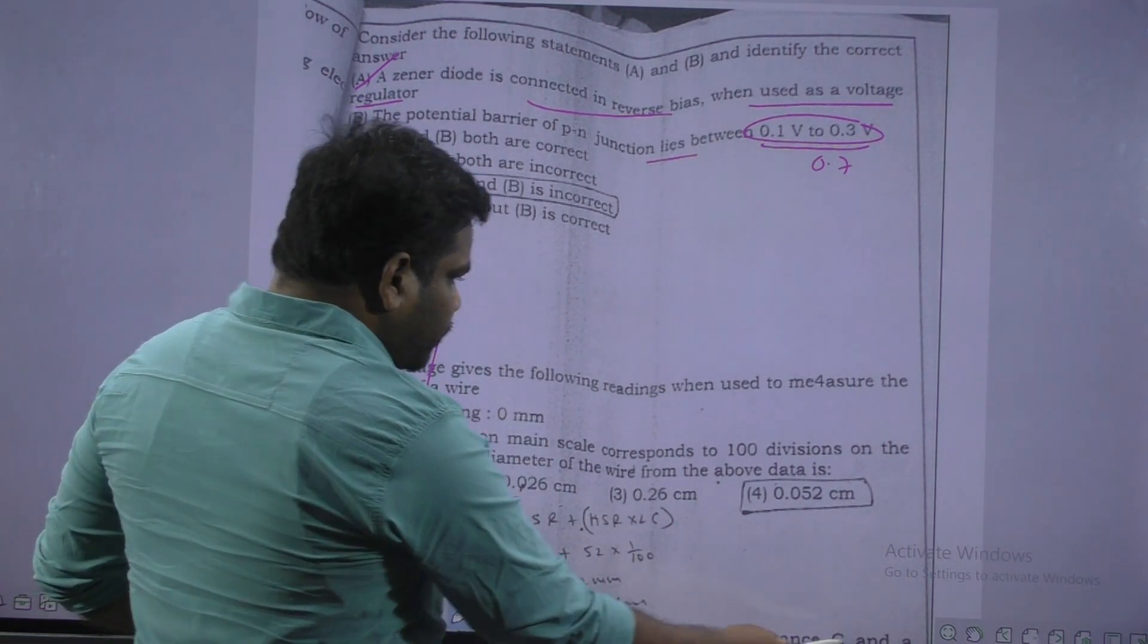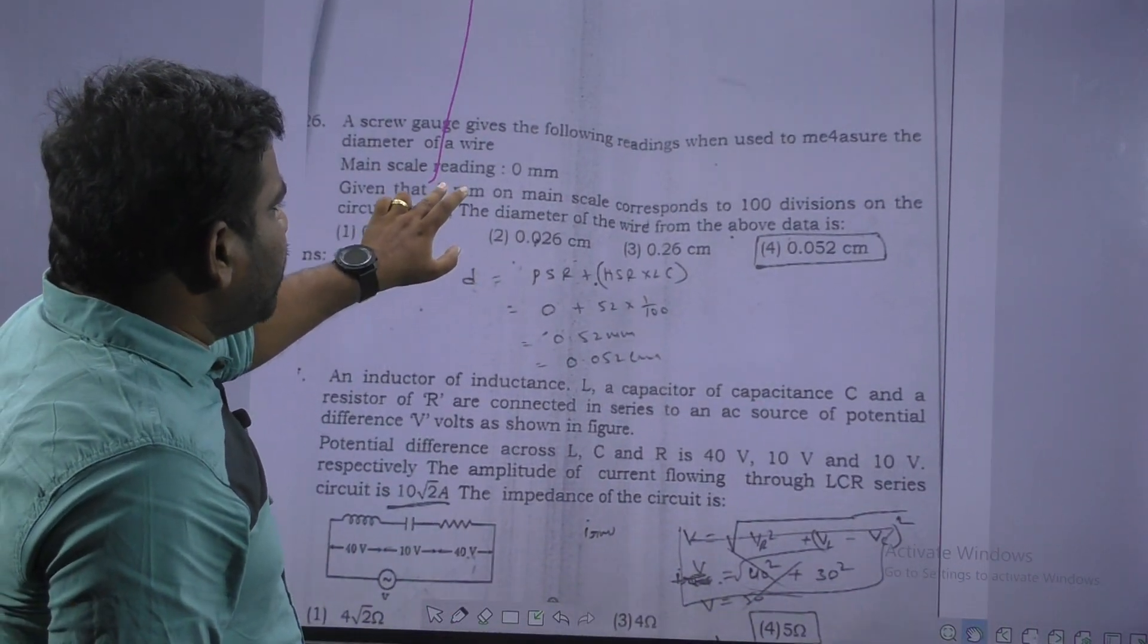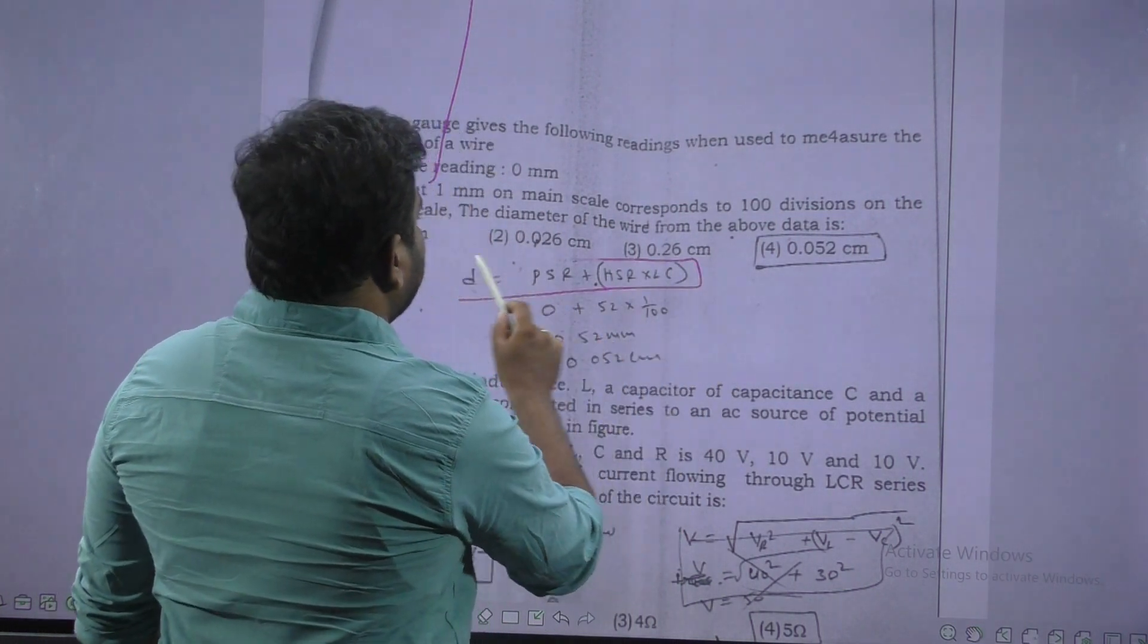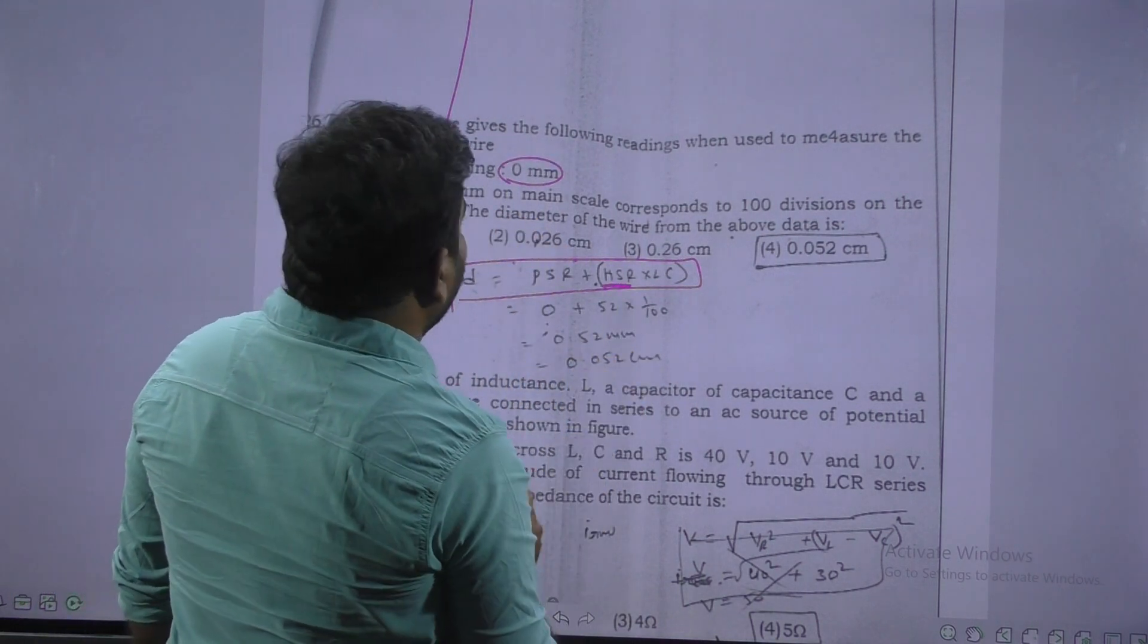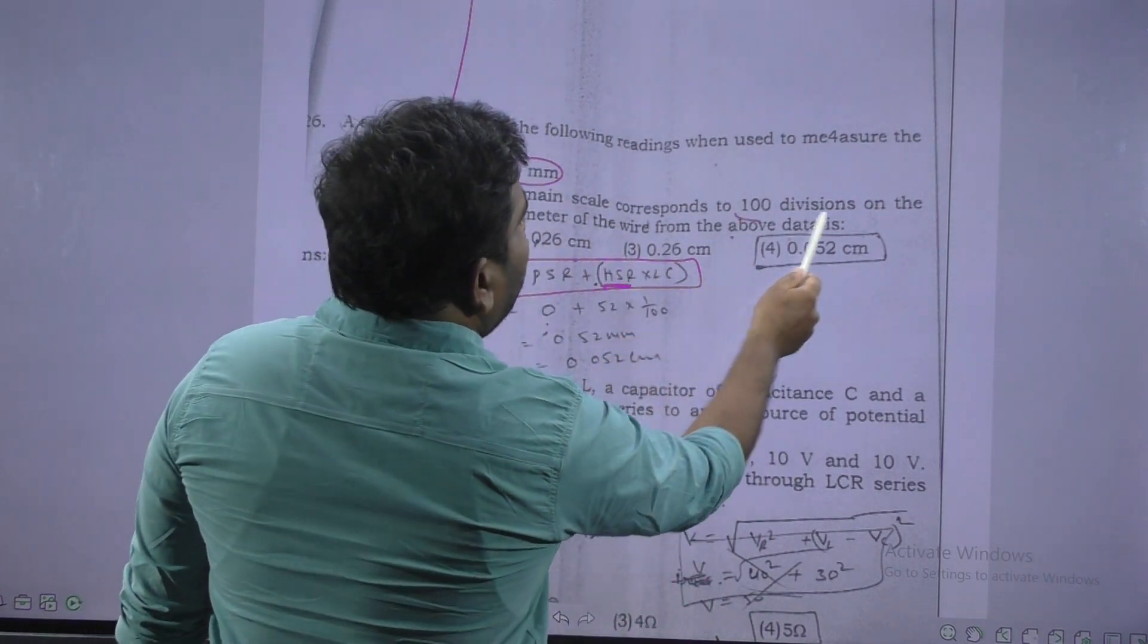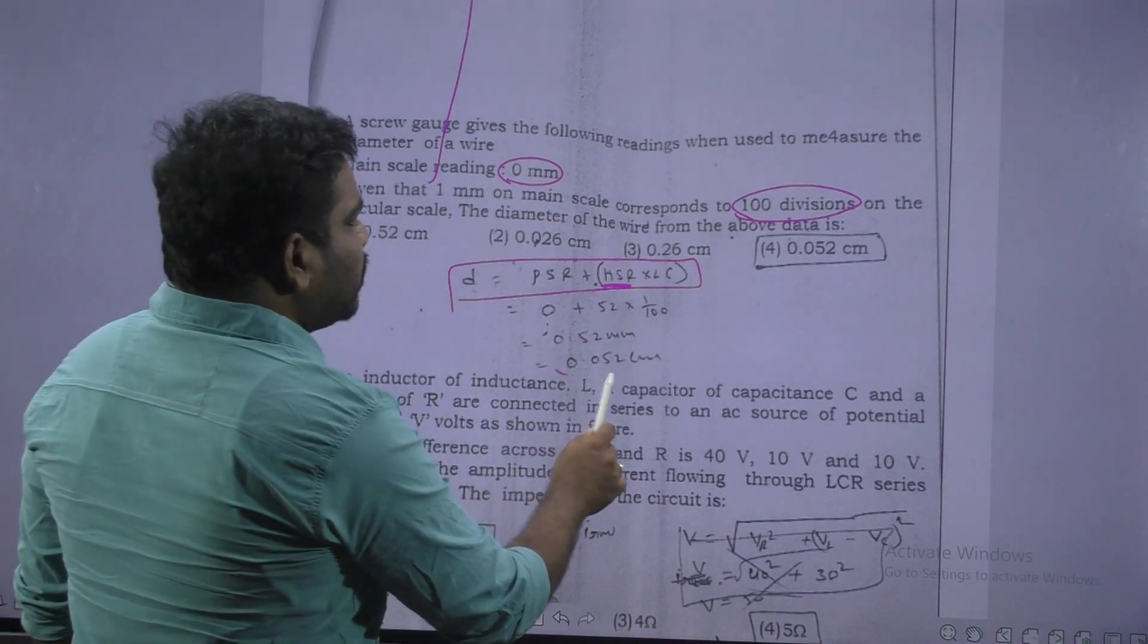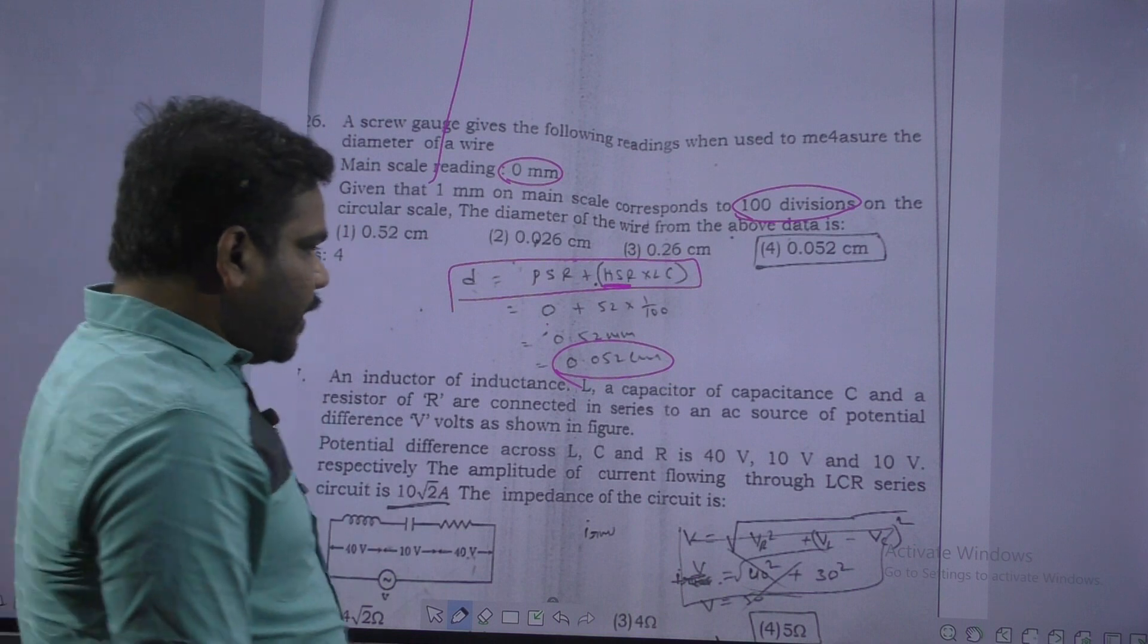Next, this is the screw gauge problem, diameter is asked. Look here, diameter formula we know very well. PSR plus HSR into LC. So PSR main scale reading is 0, HSR is given 52, and LC is given 1 by 100. So after simplify, it should convert it into centimeters, 0.052.